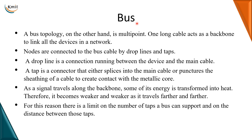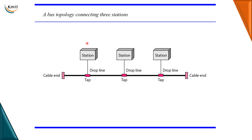Now let us come to the next topology, that is the bus topology. To remind you, there are two types of connections: point-to-point connection and multi-point connection, which we discussed in our previous video. The mesh topology and the star topology use point-to-point connections, whereas in a bus topology we have multi-point connections. That means there is a single cable which acts as a backbone connecting all the devices in the network. Every station connects to the bus cable with a drop line.